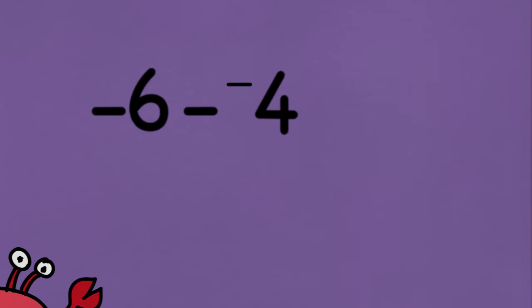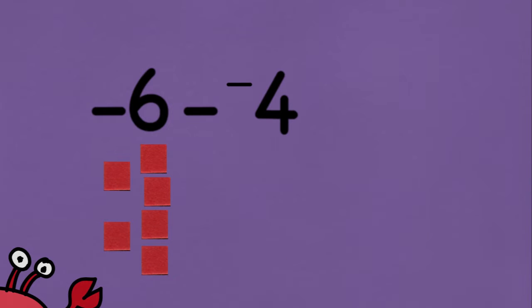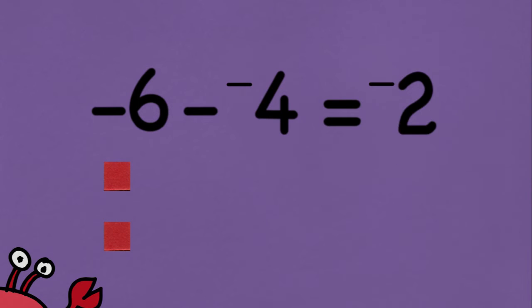To solve this problem using algebra tiles, I would start out by laying out 6 negative tiles, and then I would subtract or take away 4 negative tiles, leaving me with 2 negative tiles.